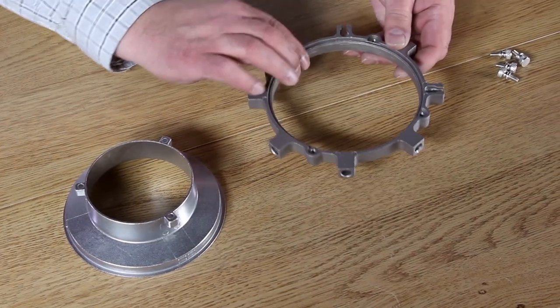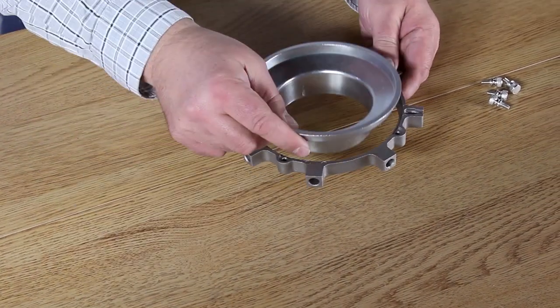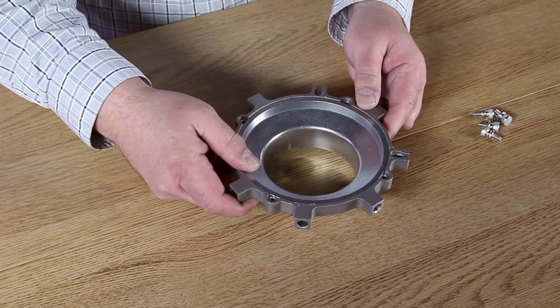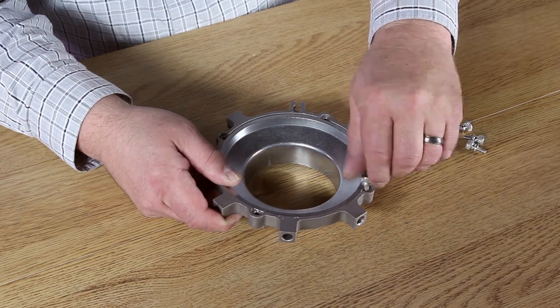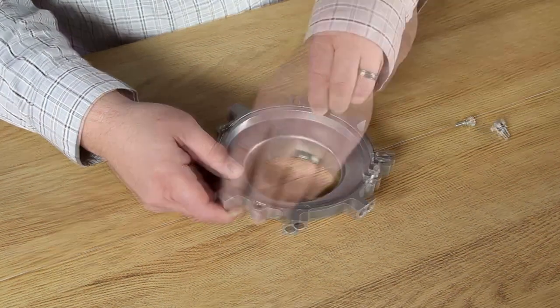Now it's time to assemble the speedring. Remove the speedring's four screws and place the speedring insert into it, with its long end facing down. Take the four screws and screw them back into the speedring, locking the insert into place.